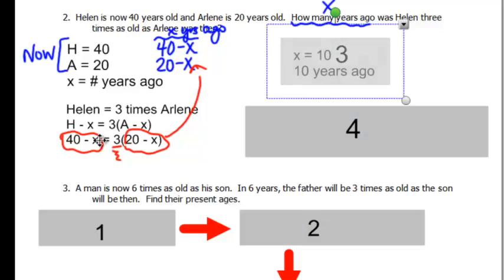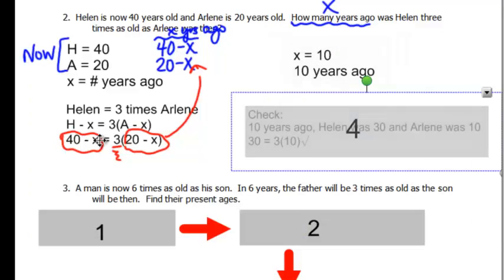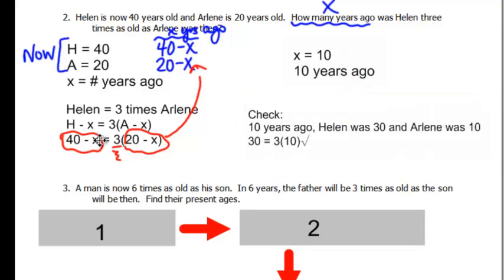And you should get x equals ten, so let's check it out. Ten years ago Helen was thirty and Arlene was ten. So does that make sense? Yes, because thirty is three times ten.